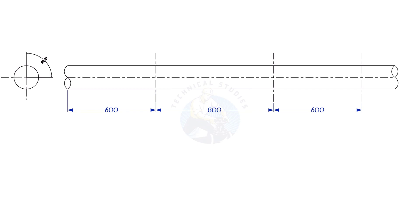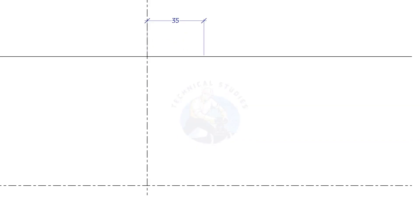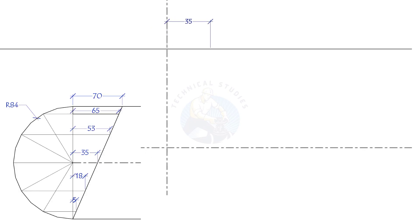Mark 35 millimeters to the right on the top side line, and 35 millimeters to the left side on the bottom line. Draw a smooth curve connecting these points.